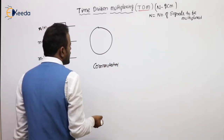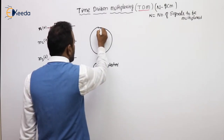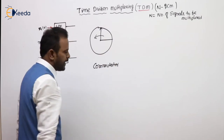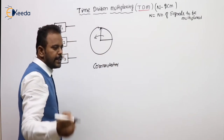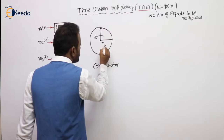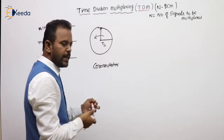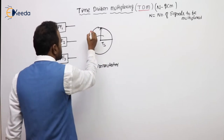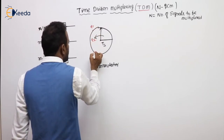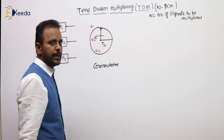This commutator is a rotating switch which rotates in anti-clockwise direction with uniform speed. The time taken by the commutator to complete one rotation is Ts. This commutator has some time slots like T1, T2, T3.